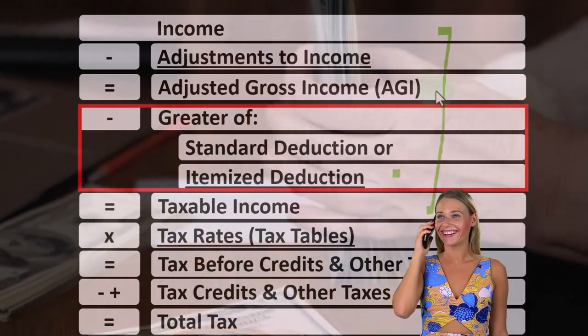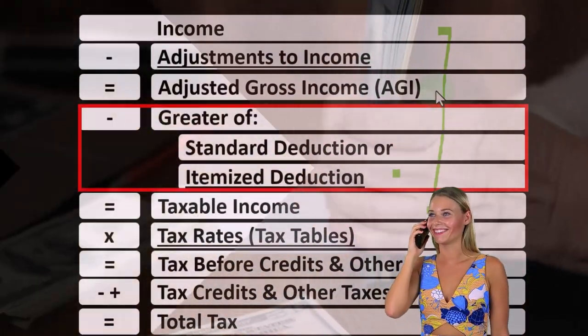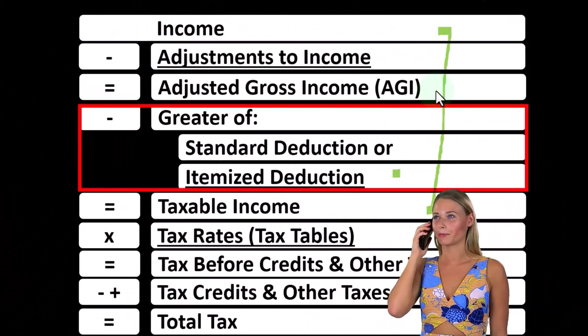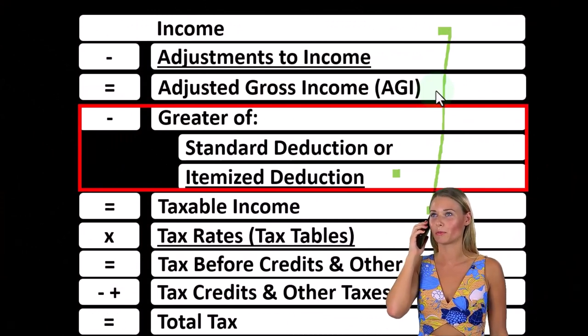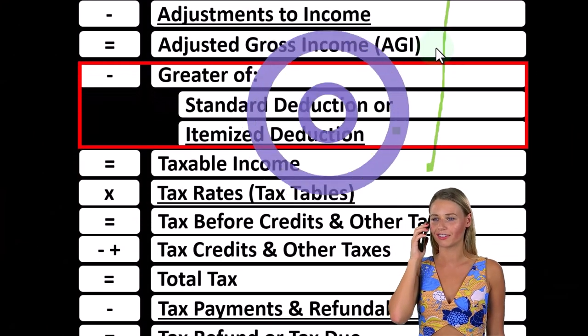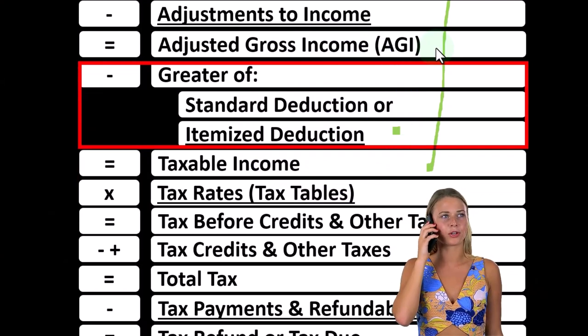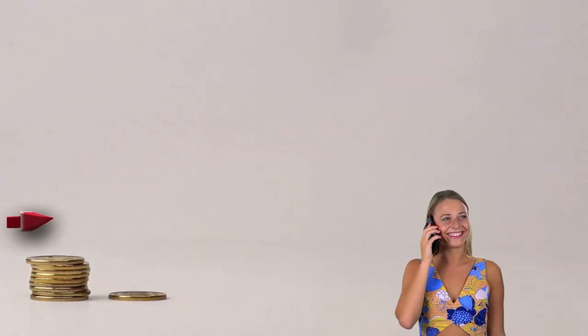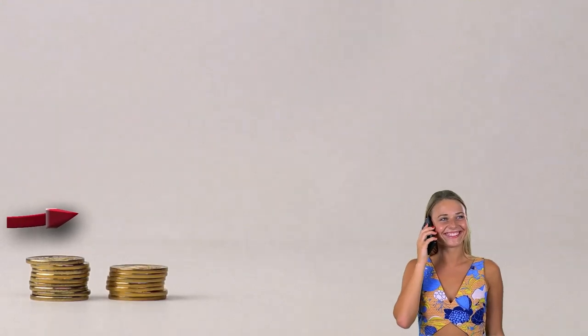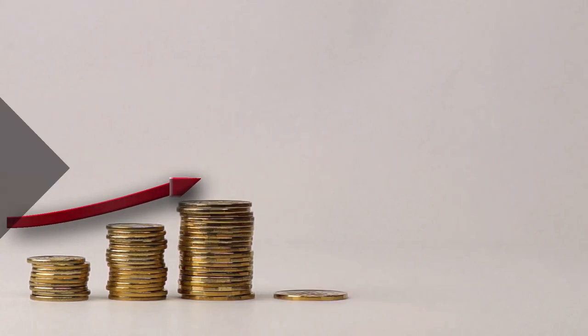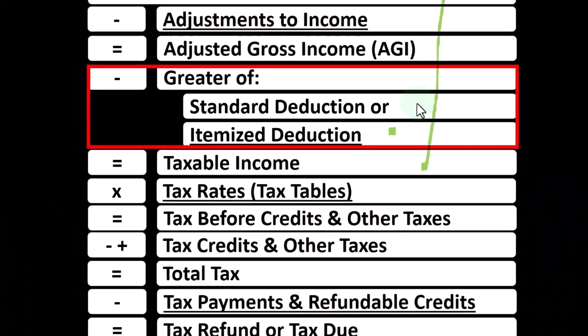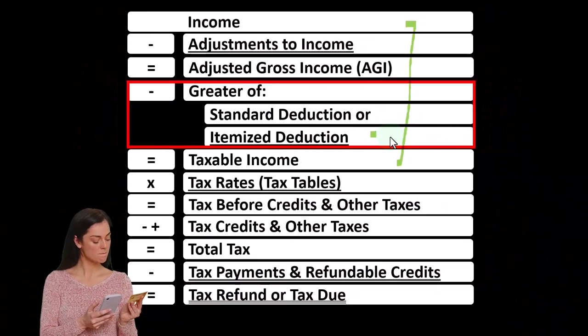That got us to the subtotal of the AGI — adjusted gross income — an important subtotal because it's often the number used to have phase-outs for income levels that are increasing with regards to expenses and credits. Then we have what could be called the below-the-line deductions: the greater of the standard or itemized deductions. Here we're focused on the itemized deductions.